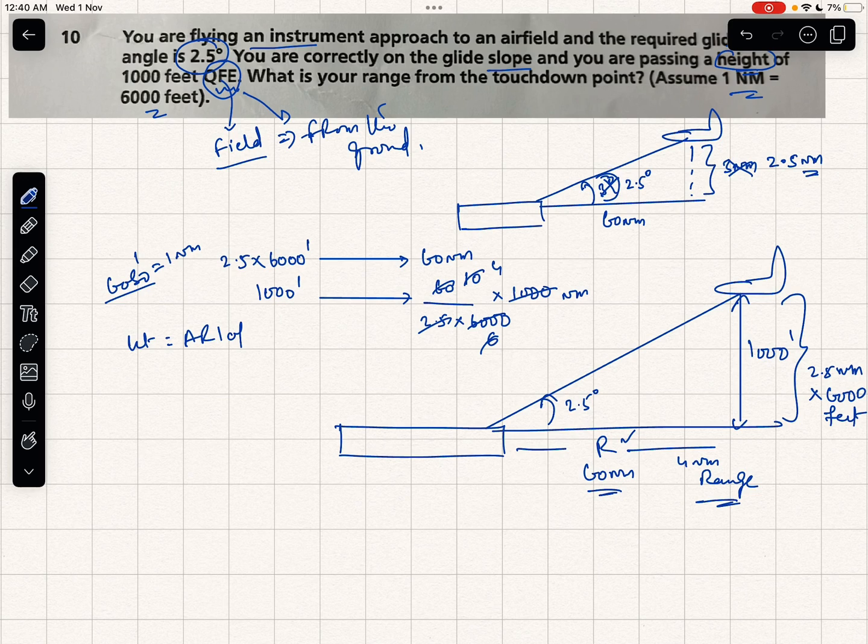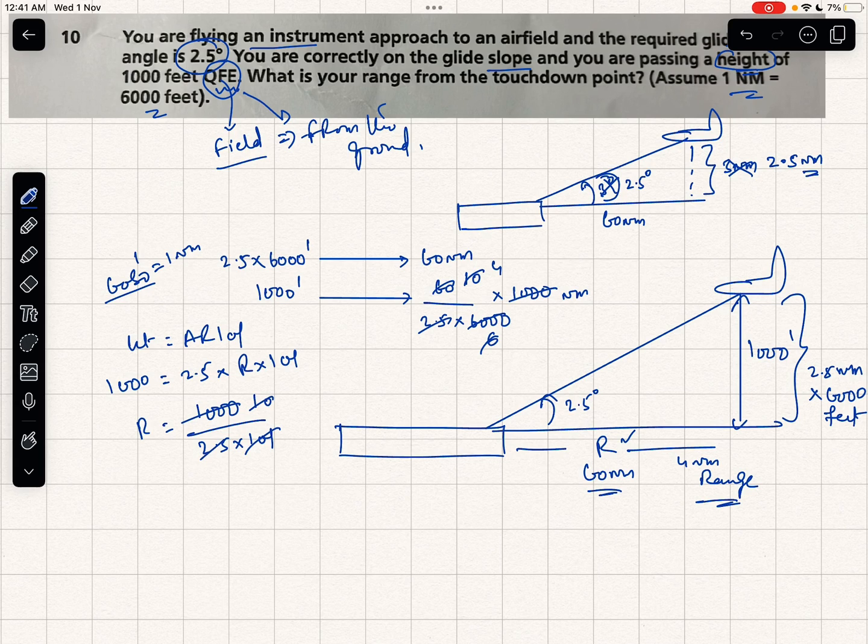You have your height 1000, angle is 2.5 into range into 101. So range equals 1000 by 2.5 into 101. Because these are approximations, I will take 100 instead of 101. So approximately you will get an answer of 4 nautical miles.